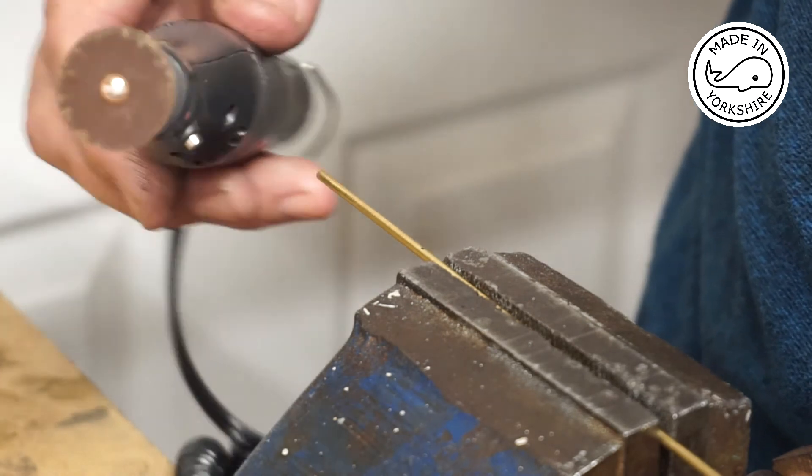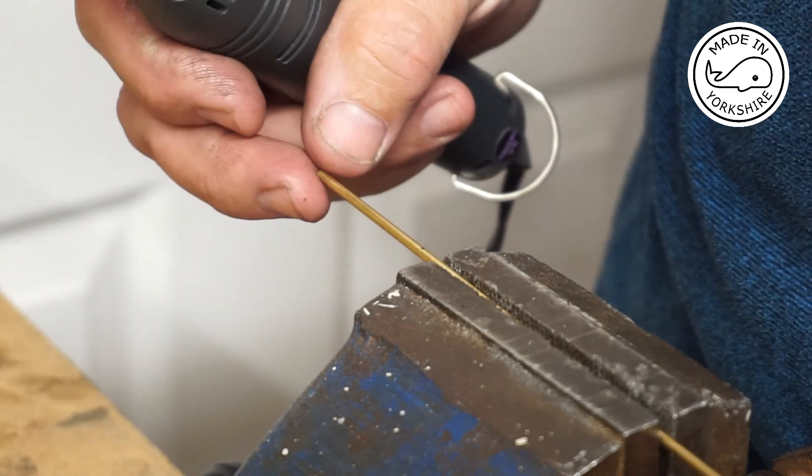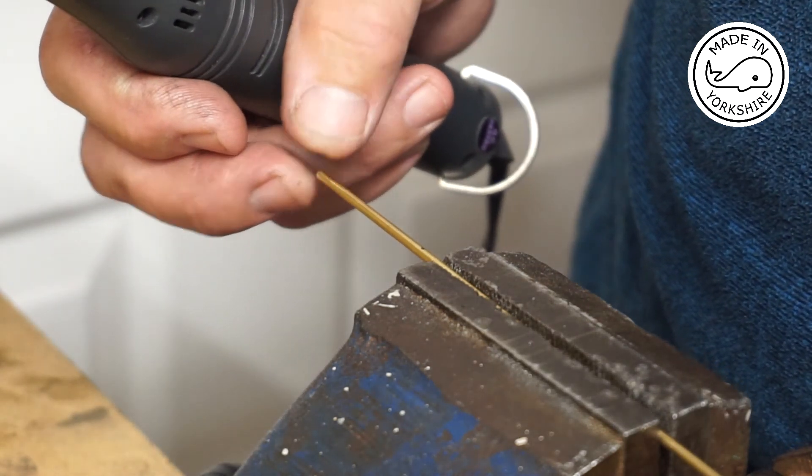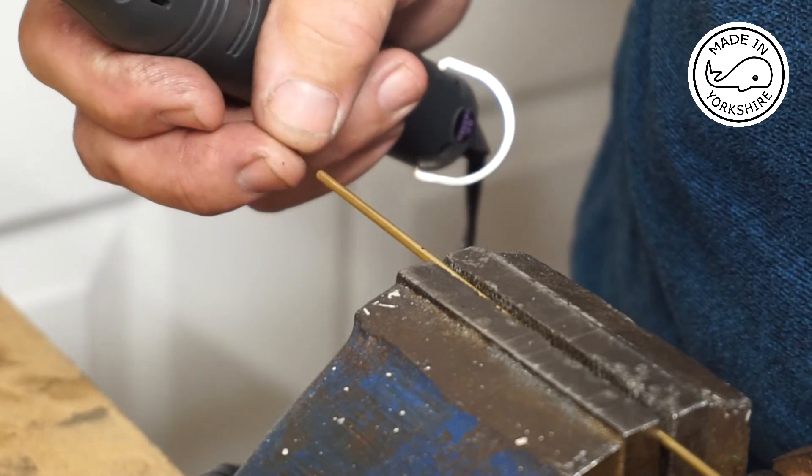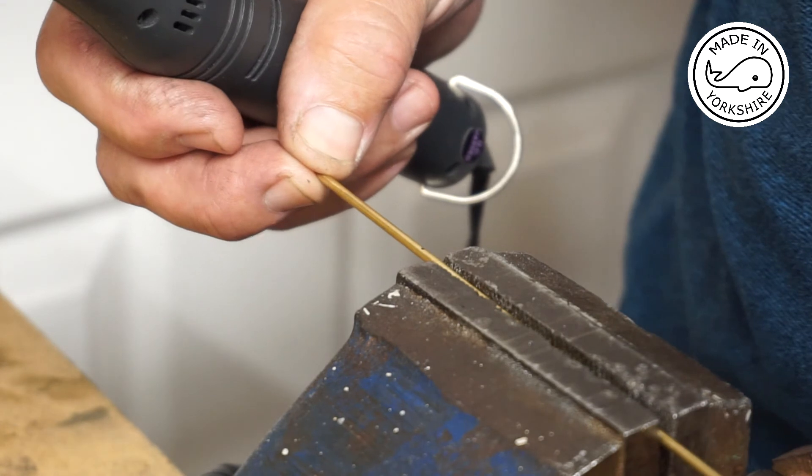Using my pretend Dremel I'm just going to cut this piece of brass bar to length to connect to the piston, so this is 3/32 in diameter.